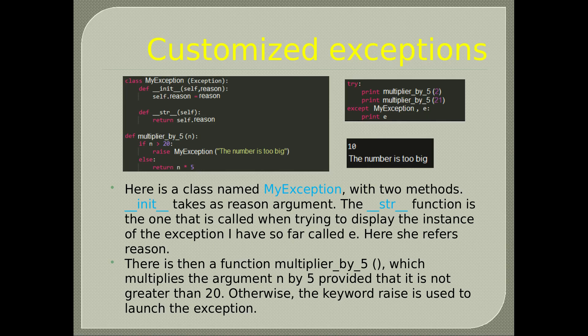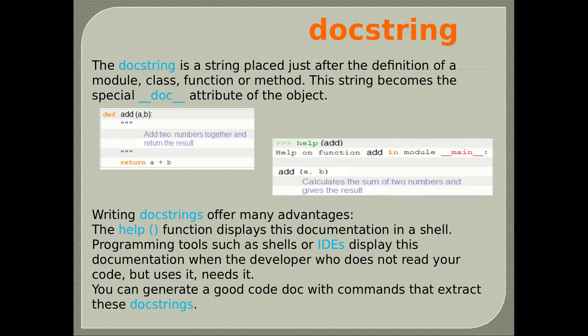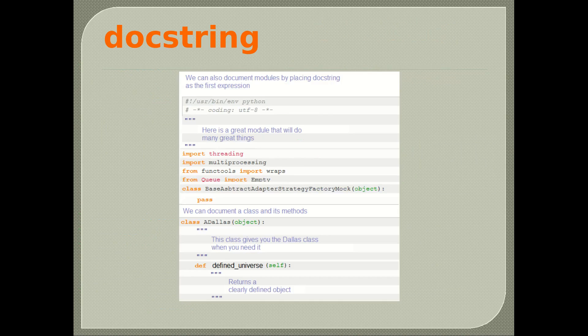DOC string: the DOC string is a string placed just after the definition of a module, class, function, or method. It becomes the special __doc__ attribute of the object. Writing DOC strings offers advantages: the help() function displays this documentation in a shell, and programming tools such as IDEs display it when the developer needs it. You can generate code documentation with commands that extract these DOC strings. We can document modules, classes and methods by placing DOC strings as the first expression after their definition.